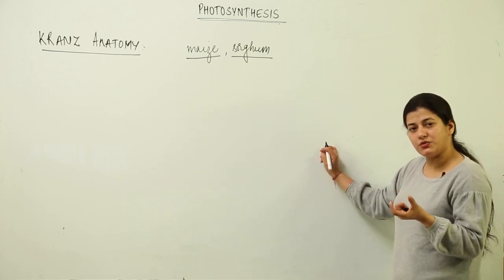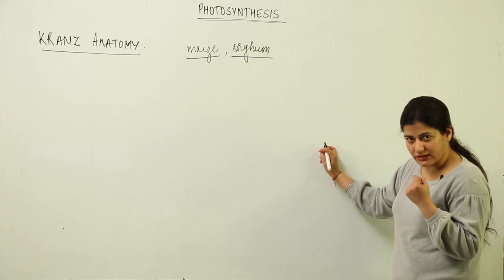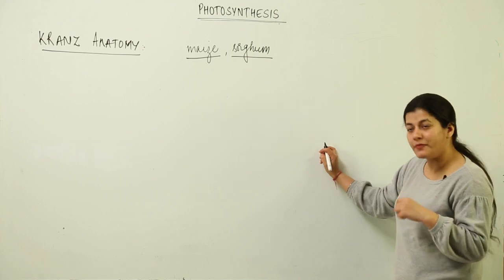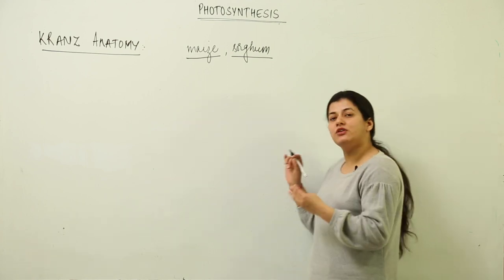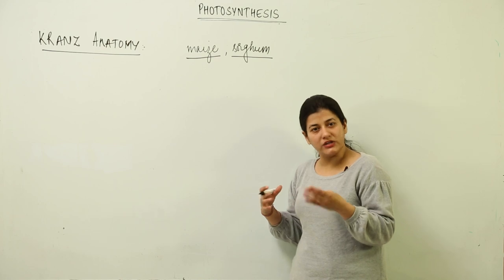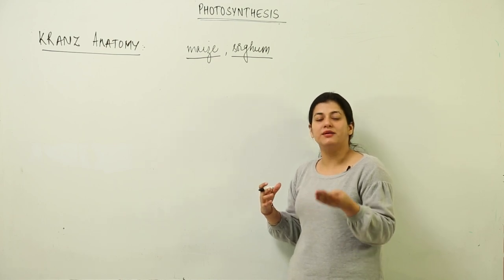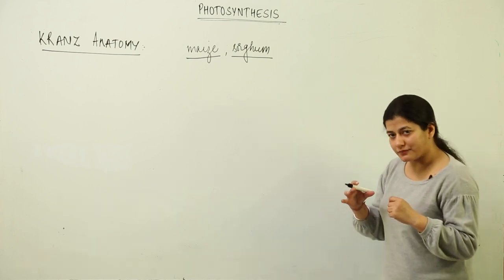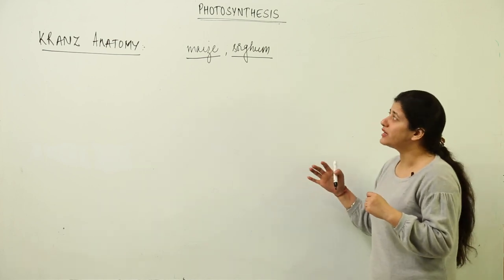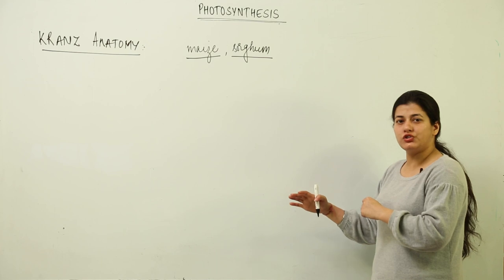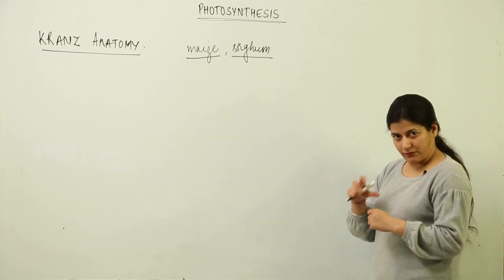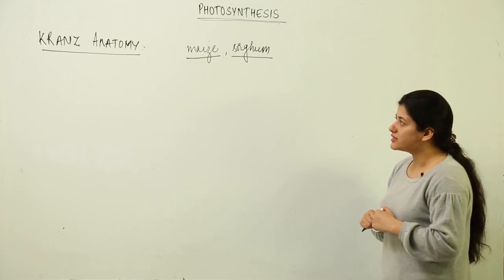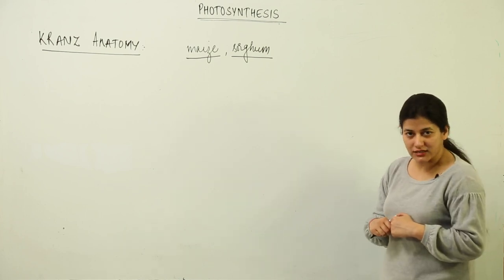The C3 cycle acts according to Rubisco. Rubisco is the enzyme, and as we discussed, Rubisco has a much higher affinity for oxygen. Also, the atmospheric content of oxygen is much higher compared to carbon dioxide. So plants have adopted a method where they can avoid oxygen entering the cells — to be very specific, inside the chloroplasts.